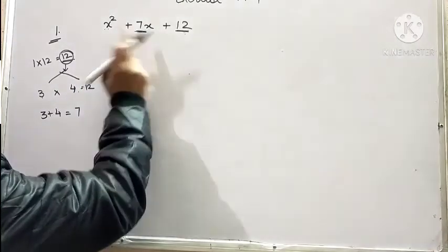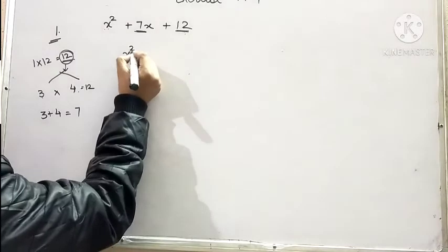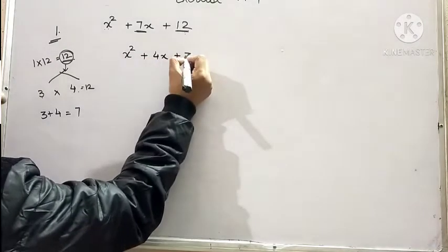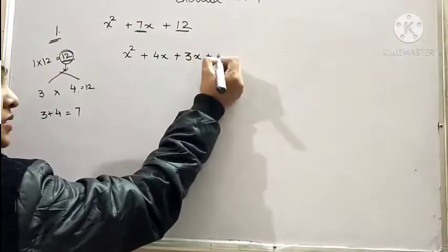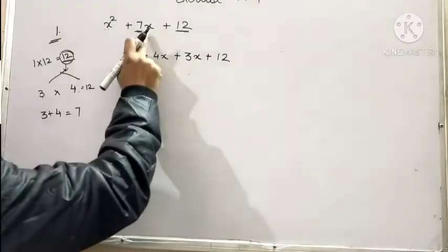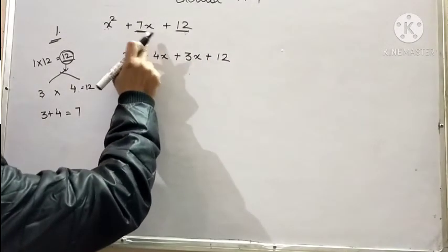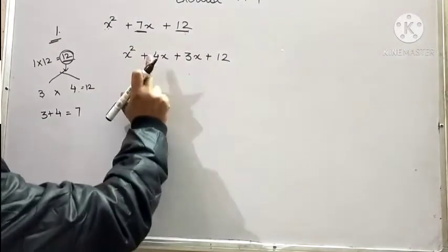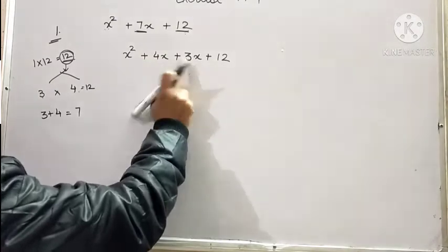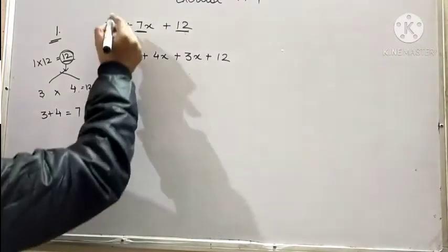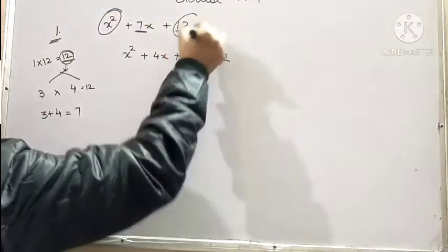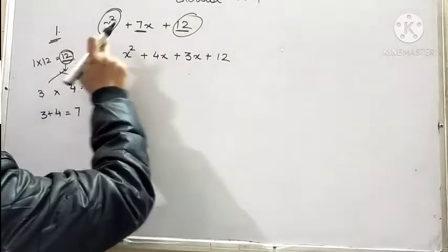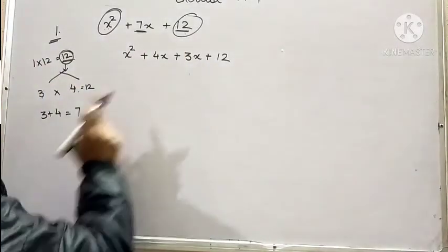So we will factorize 7x as x square plus 4x plus 3x plus 12. See, we are able to factorize 7x such that the sum is 7x and product is 4 times 3 is 12x square, the product of first term and product of last term. I repeat, product of first term and product of last term.